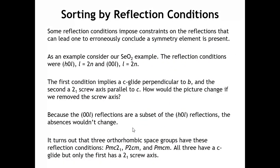Now when you think about those conditions, it sounds straightforward to look at which peaks are missing and say: here's a glide plane, here's a screw axis, here's a lattice centering. But sometimes absences imposed by one or more symmetry elements can make it look like a symmetry element is there when it really isn't. Going back to our selenium dioxide example, the peaks that are missing are H0L when L is not an even number, and 00L when L is not an even number. The first condition suggests a C glide perpendicular to B, and the second suggests a 2₁ screw axis parallel to C.